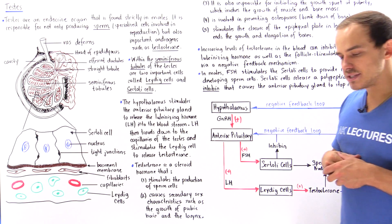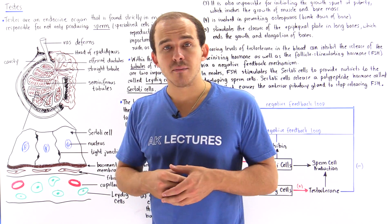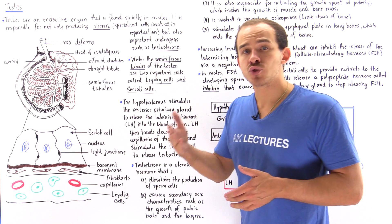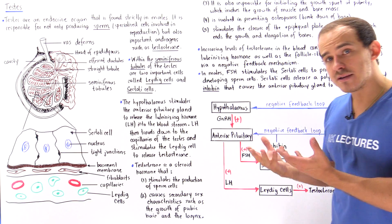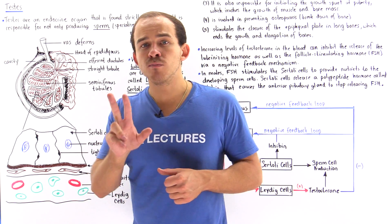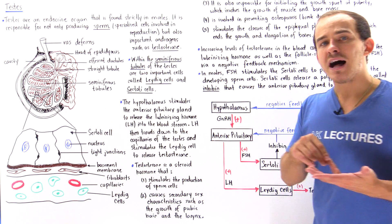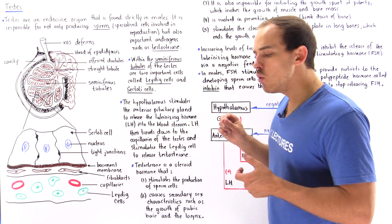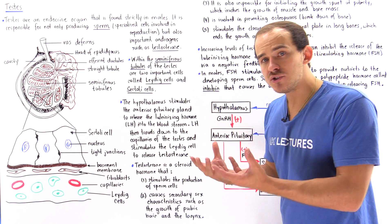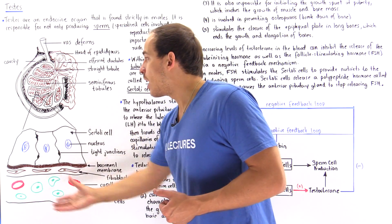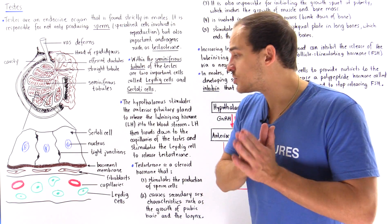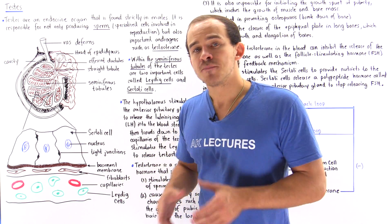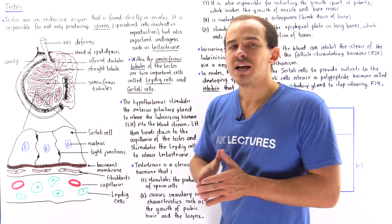In our discussion on the hypothalamus and the anterior pituitary gland, we said that the hypothalamus produces and releases a hormone known as GNRH, which stands for gonadotropin-releasing hormone. This hormone stimulates the anterior pituitary gland to release two important types of hormones: follicle-stimulating hormone (FSH) and luteinizing hormone (LH). When LH is released into our bloodstream, it travels to the capillaries of our seminiferous tubules and attaches to the cell membrane of the Leydig cells.